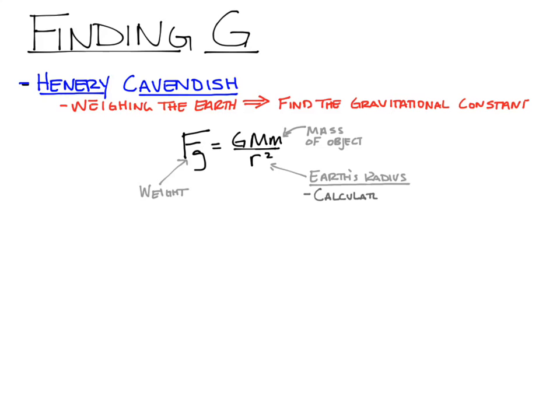Earth's radius was calculated around 200 BC by a Greek mathematician named Eratosthenes — he calculated the earth's radius to a high degree of accuracy almost 2,200 years ago. So by the time we got to Henry Cavendish, we knew the earth was round and we knew how round it was.